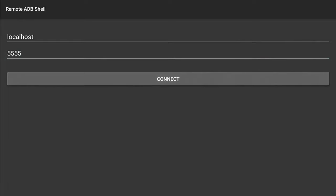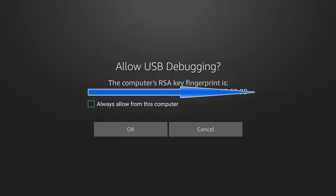Press the Play/Pause button and make sure it shows 5555 at the top of the screen. Press Play/Pause again, then go down and make sure Connect is highlighted — it's a slightly lighter gray when selected. Press the middle button. If you see 'Allow USB Debugging', make sure there's a tick in 'Always allow from this computer', press the middle button to tick it, then go down to OK and press the middle button.